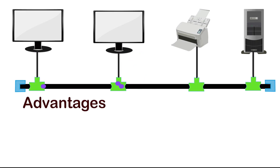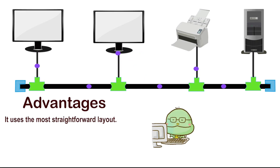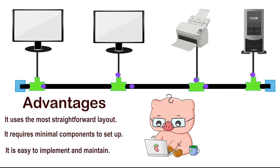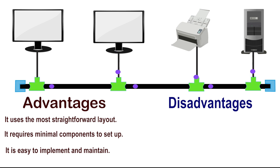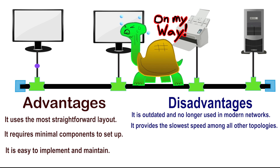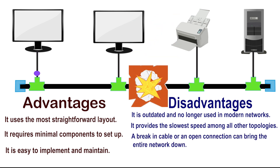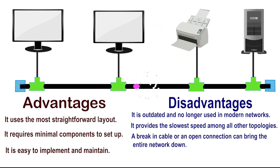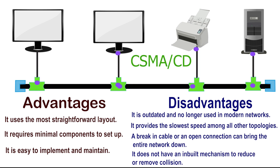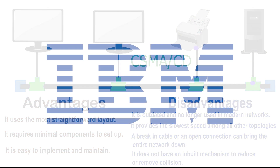This topology has the following advantages: it uses the most straightforward layout, requires minimal components to set up, and is easy to implement and maintain. Its disadvantages include being outdated and no longer used in modern networks, providing the slowest speed among all topologies, and lacking an in-built mechanism to reduce or remove collisions. Because of this, IBM developed its own topology to address the collision issue.